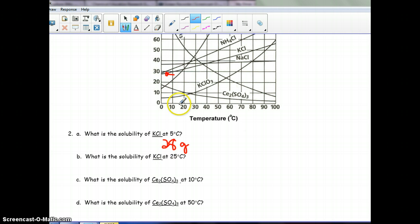KCl at 25 degrees. So we go over to KCl at 25. Trace it up. This time, we're about here. Trace that back over. That's about 35, so about 35 grams can be dissolved in 100 grams of water at 25 degrees.